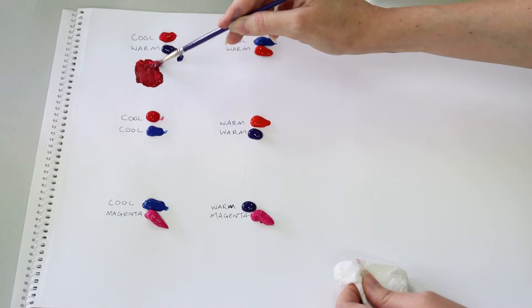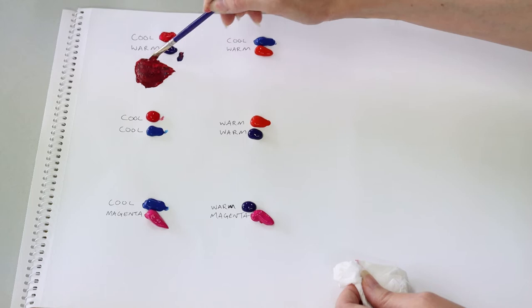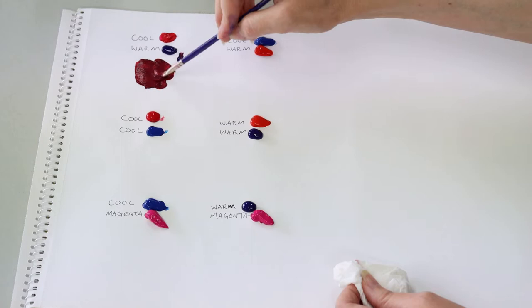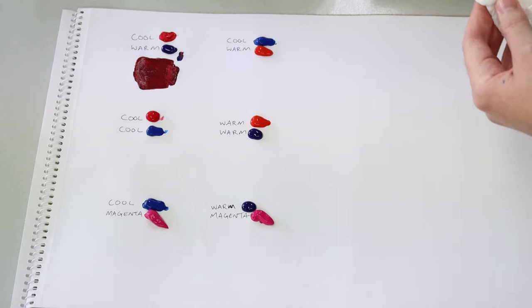Now I might even mix in a little bit of white with some of these because we're dealing with very strong colors here and when I say strong colors I'm talking about strong pigments which means that as it is on the page it might be a little bit tricky to see what's really going on but that one there cool and a warm there that looks pretty lovely.